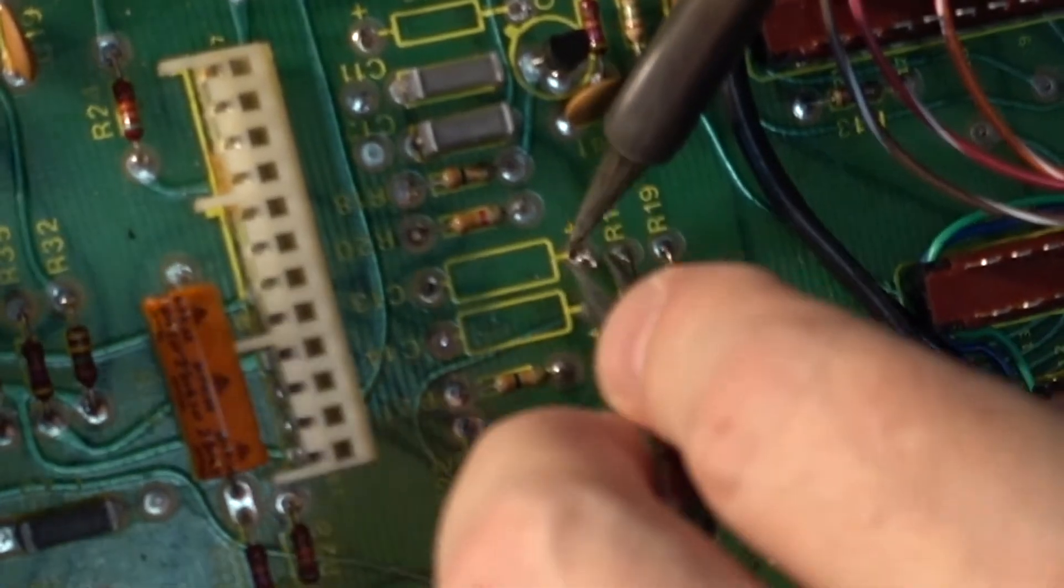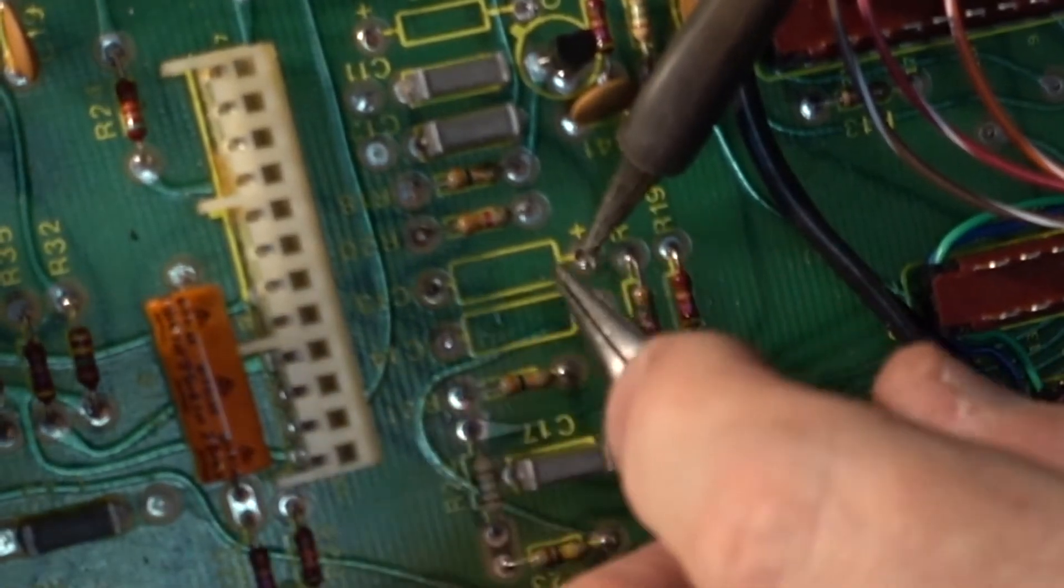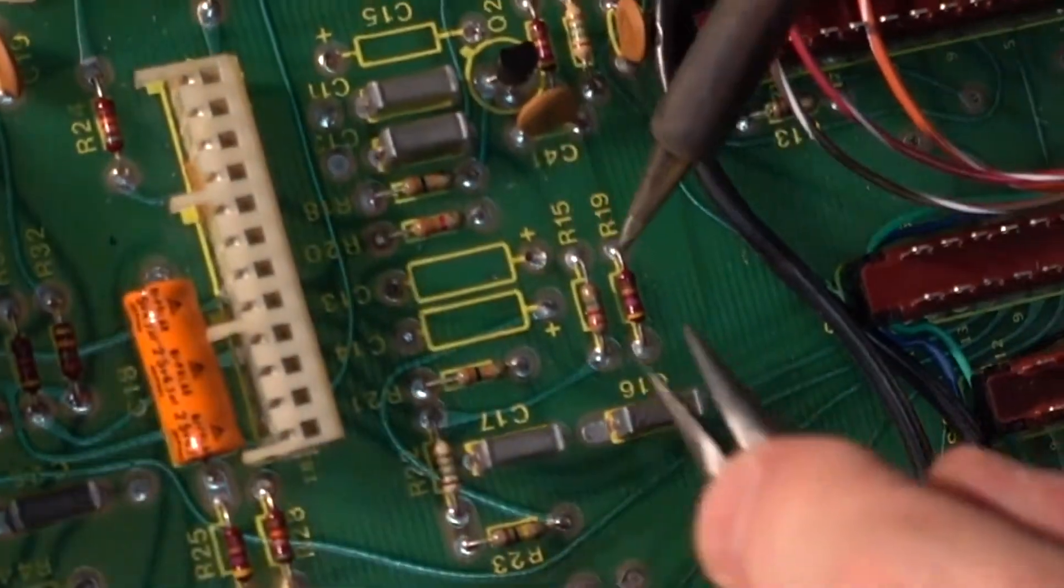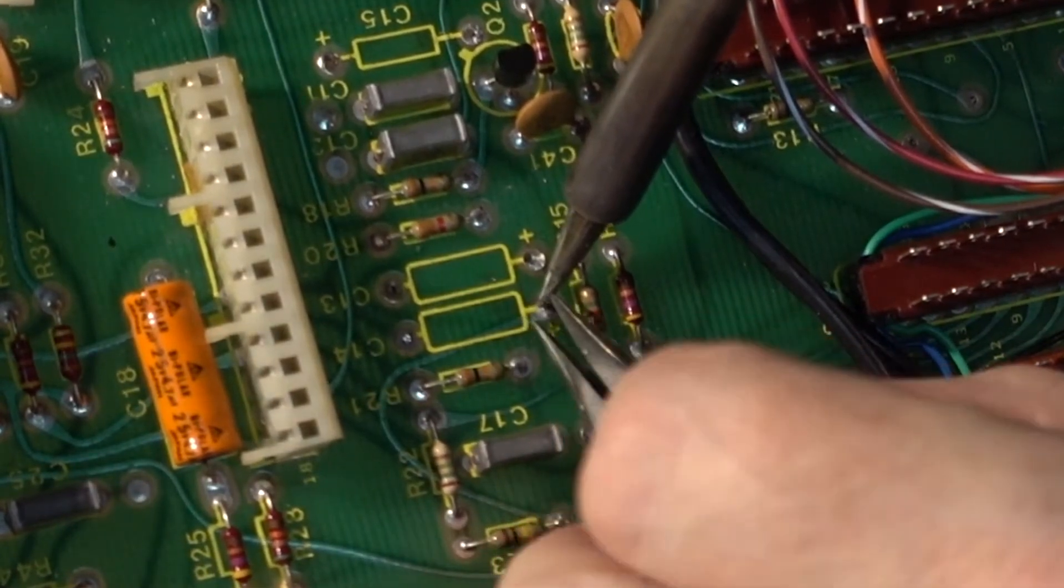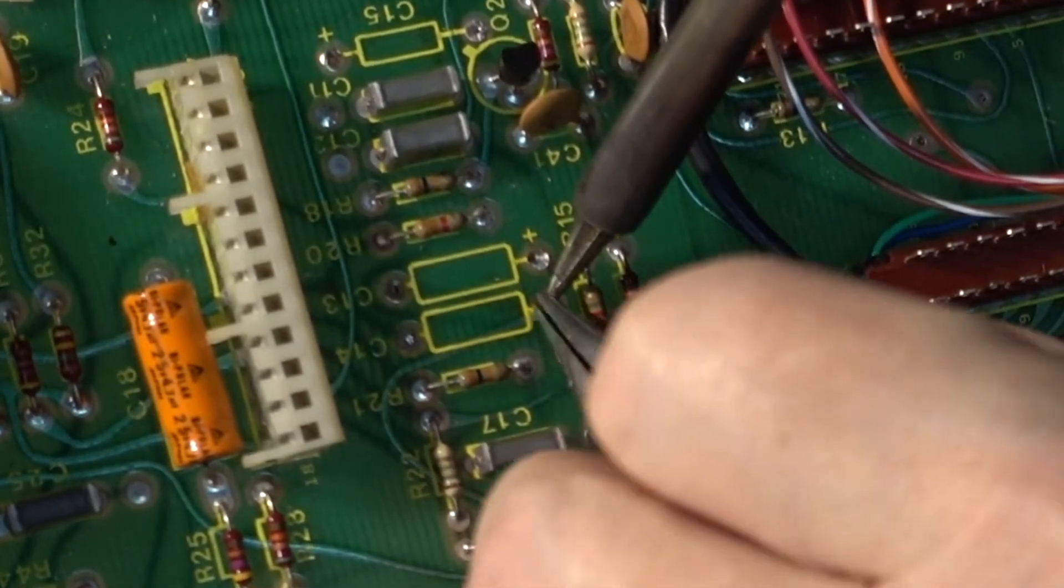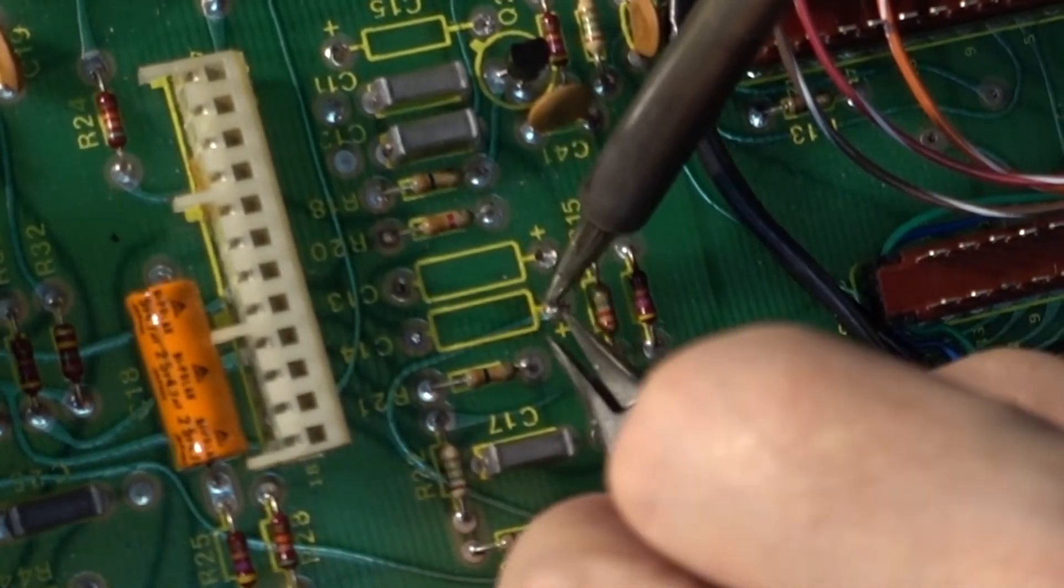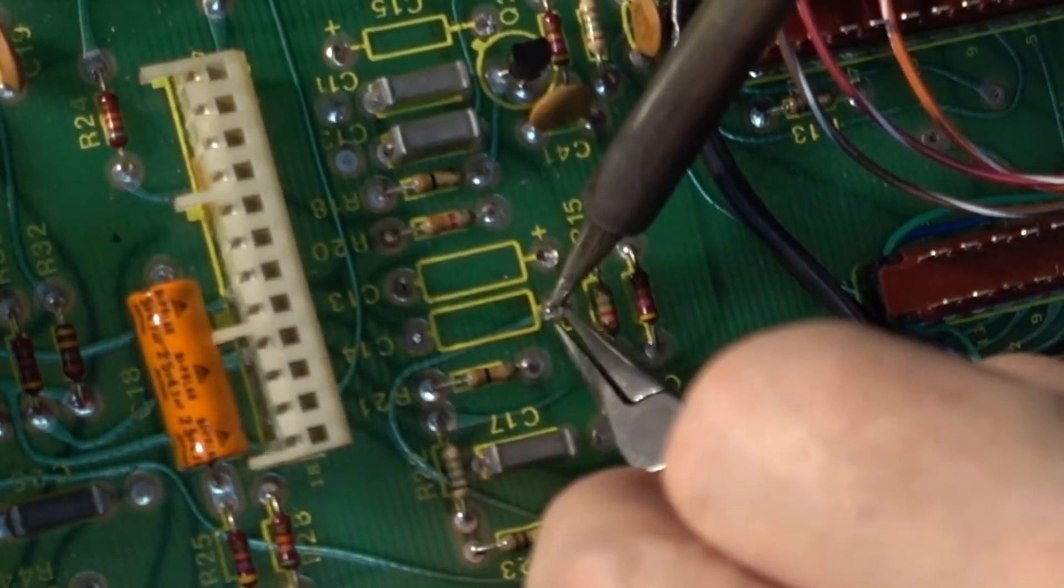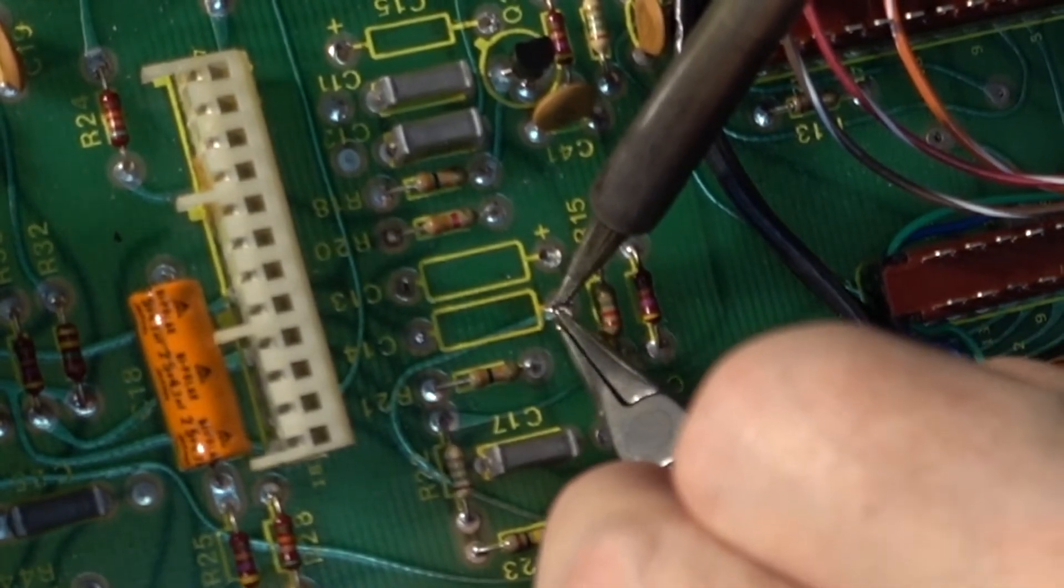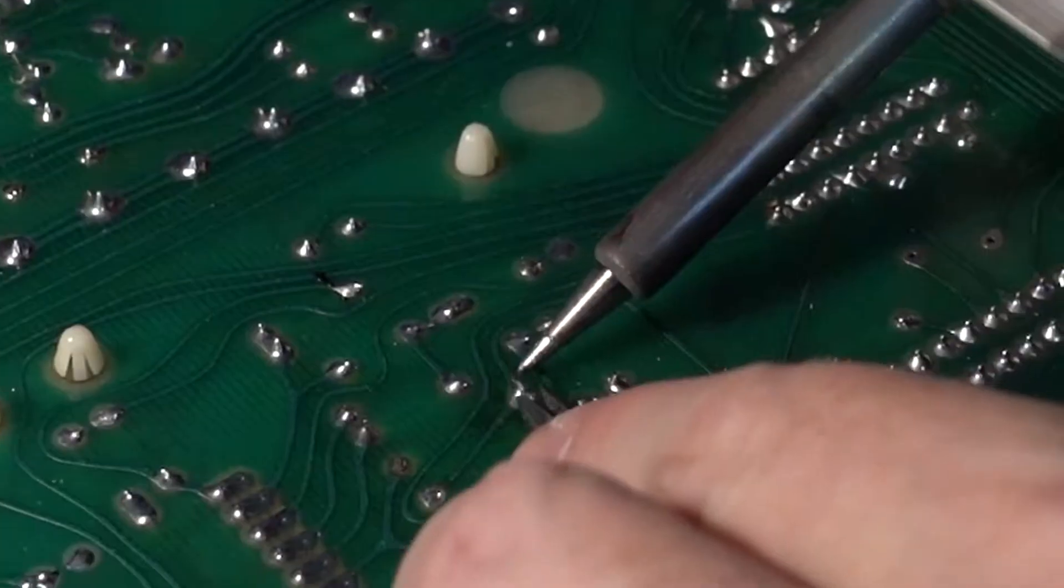Now I have to remove the remains of the leads, which can be done two ways. Either pulling it out from the top side of the board. Or sometimes, like in this case where we have the trace on the top, it's even better to push it through to the back side of the PCB, especially if it's a thick lead which was bent on the other side. And then just remove it from the other side.